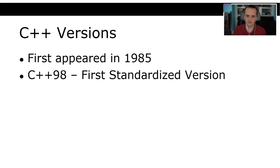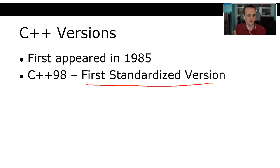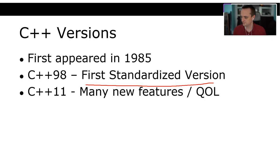C++ versions: the language first appeared in 1985. C++98 was the first standard version — if you SSH into a university machine and type g++ to compile a program, it will by default usually use C++98. C++11 was where I really started to get heavily into C++, with many new features and quality-of-life improvements. In my opinion, C++11 was when C++ became a language I wanted to use rather than one I was forced to use.